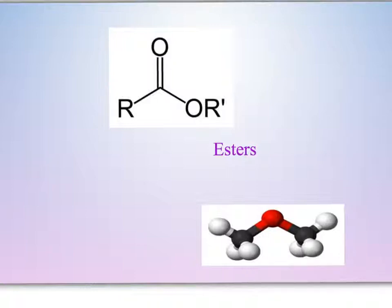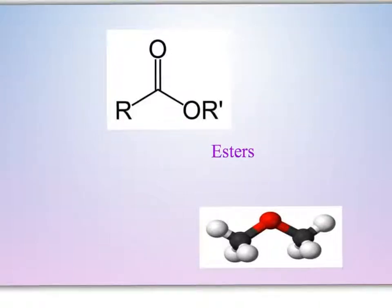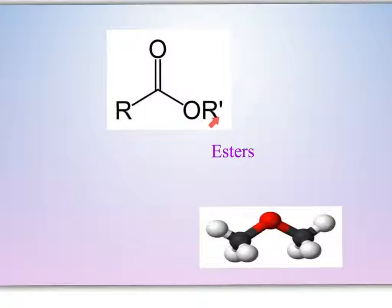Now in an ester, the hydrogen that is in the carboxyl group is going to be replaced with an alkyl group. The functional group for an ester is going to be a carbon that is double bonded to an oxygen, attached to an oxygen, and then this oxygen — which would normally have the hydrogen — will have a carbon chain continuing out. We'll see a carbon chain in this direction and a carbon chain in this direction.